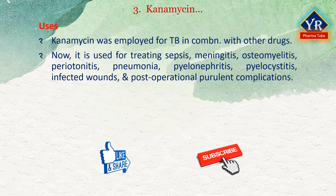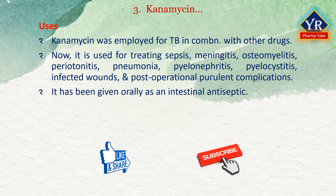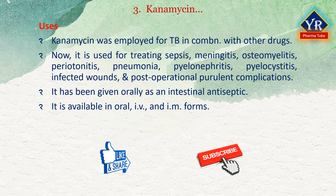Kanamycin is used for treating sepsis, meningitis, osteomyelitis, peritonitis, pneumonia, pyelonephritis, pyelocystitis, infected wounds, and post-operative purulent complications caused by microorganisms sensitive to the drug. Like neomycin, kanamycin has been given orally as an intestinal antiseptic. It is available in oral, intravenous, and intramuscular forms.